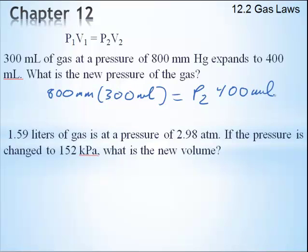Now, before we use our calculator, let's just think in our mind what should happen. What's happening to this volume? The volume from 300 to 400 is increasing. So the volume's going up. So what are we going to expect the pressure to do?